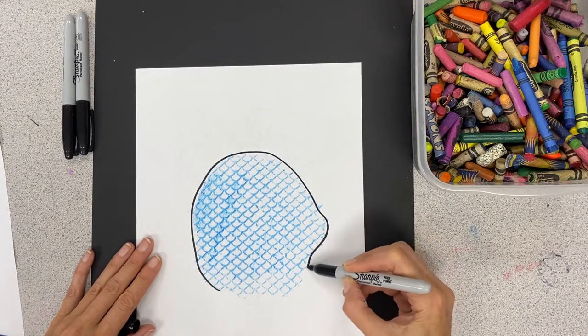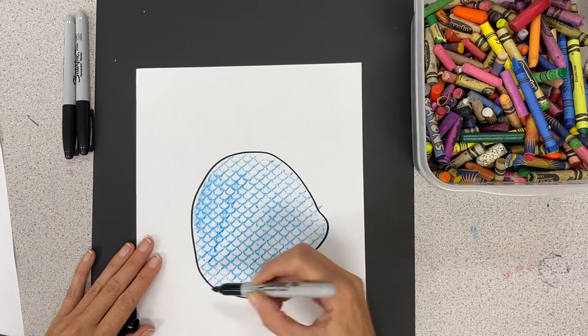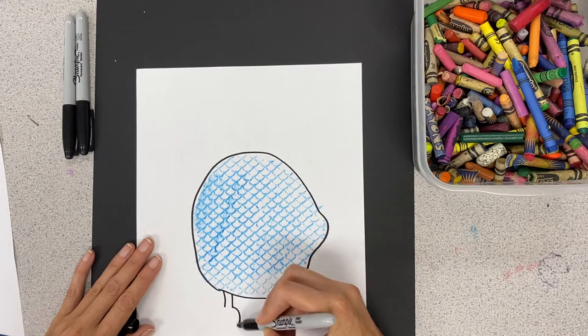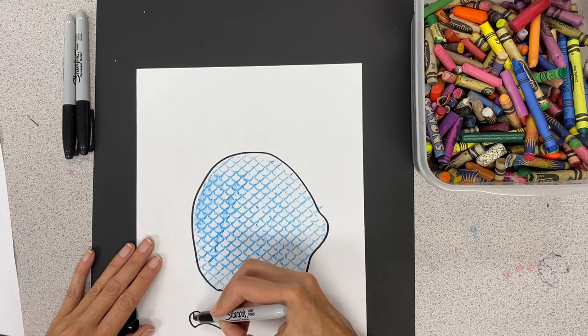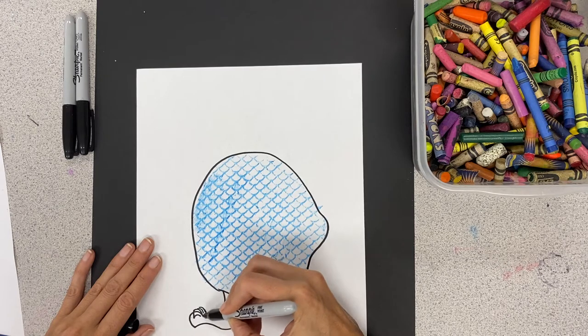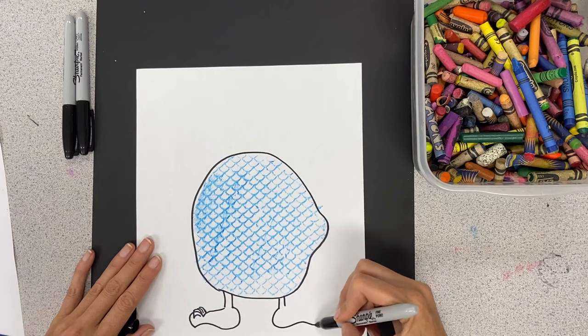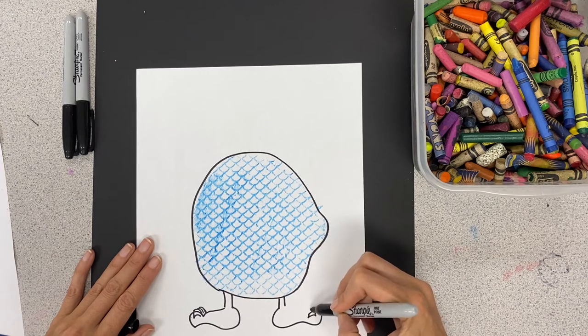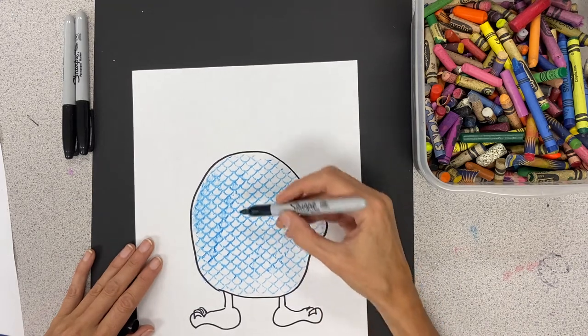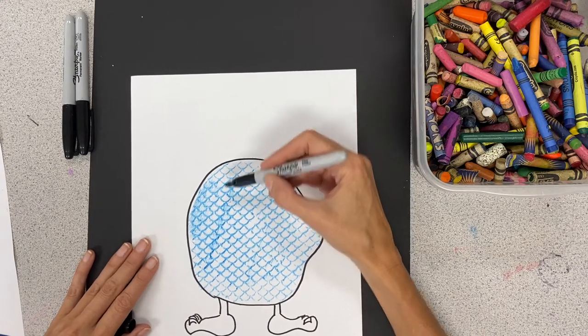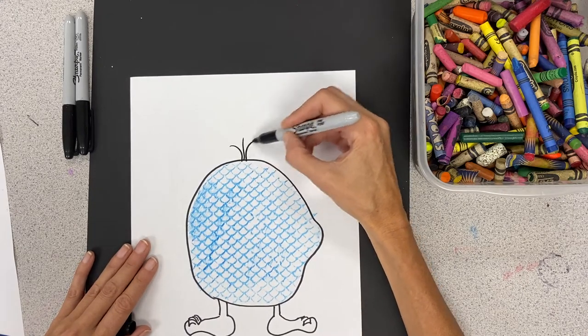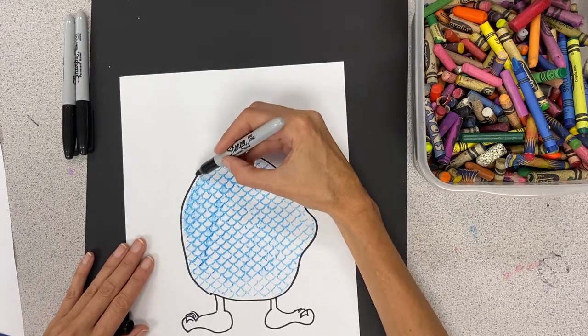You can have a weird bump right here, and then I'll give him some funny feet, toenails. This will be some weird growth on his body. Give it some feet. I could give it some little hairs coming off the top of his head, maybe some little pointy things.